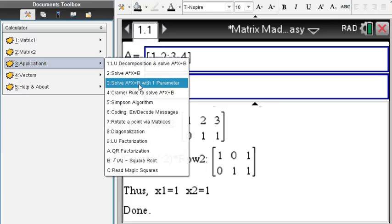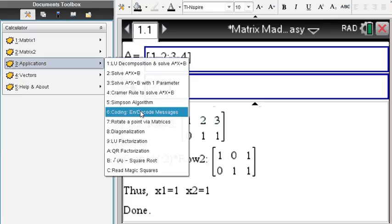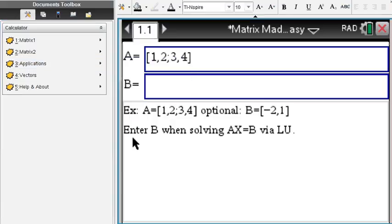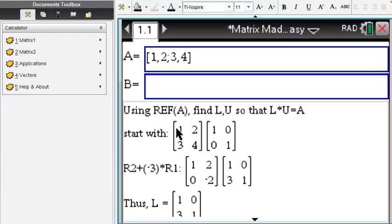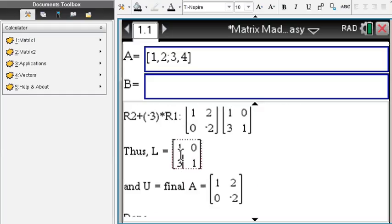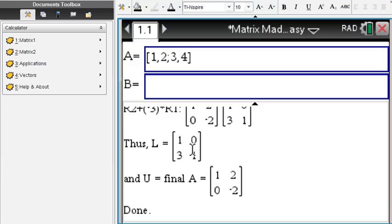Okay, you can also solve the same type of equation using a parameter. You can do the Kramer rule, you can do the Simpson algorithm. You can encode and decode messages. As you lower and upper factorization done right here for you, so the lower matrix turns out to be this one, 0 3 1, so we have a 0 above the diagonal. And the upper matrix U is going to be 1 2 0 negative 2. You multiply those two matrices and you arrive at your A.